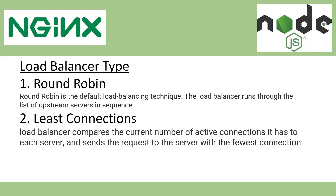In this video I want to explain only these two types of load balancer — there are a few more types but I'm not going to cover them here. The first one is Round Robin. Round Robin is very similar to a for loop — it executes one by one. For example, if we have three Node applications, the first request goes to Node app one, the second to Node app two, the third to Node app three, then it cycles back to one, like a for loop.